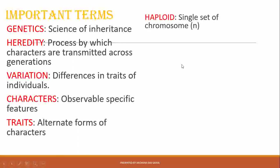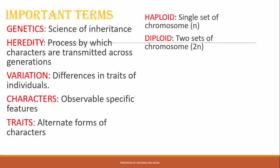Haploid means a single set of chromosomes — in humans, that is 23 chromosomes, which makes up the haploid number (n). Diploid means two sets of chromosomes (2n) — in humans, that is 46 chromosomes, which is the diploid number.